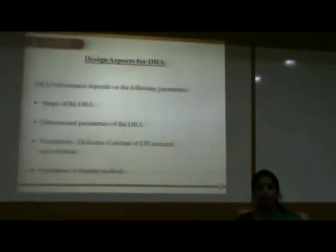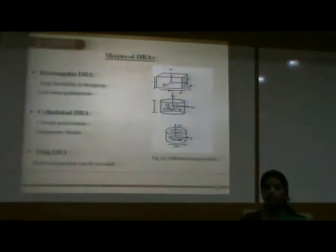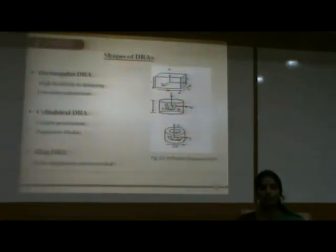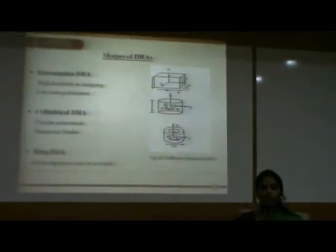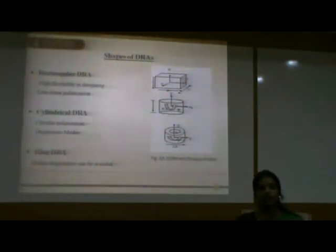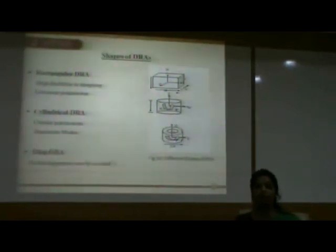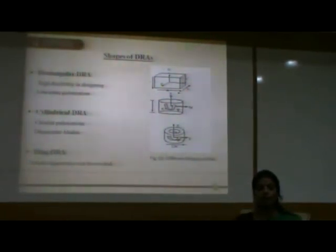Now let us discuss the design aspects of DRA. DRA performance depends on the following parameters: the shape of the DRA, dimensional parameters, permittivity or dielectric constant of the material and substrate, and the excitation or coupling method. Various possible shapes of DRA include rectangular DRA, cylindrical DRA, and ring DRA. Rectangular DRA is most widely used because of its high design flexibility and low cross-polarization. Cylindrical DRA is useful for obtaining circular polarization but suffers from the problem of degenerate modes. Ring DRA is a variation of cylindrical DRA in which a concentric cylinder is cut out, eliminating the problem of mode degeneracy.